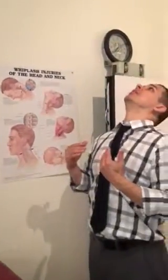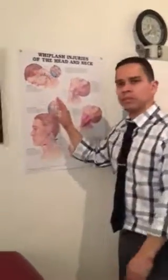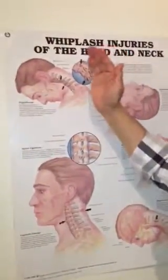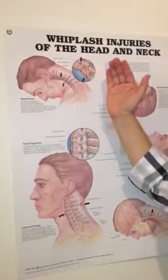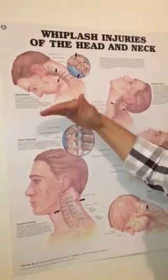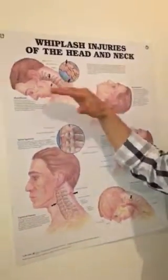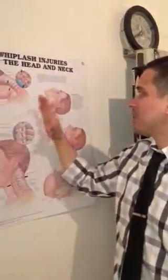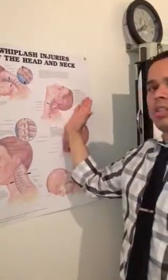Whiplash is an injury that occurs when the neck gets hyper-extended and hyper-flexed. We're going to take a look at the mechanism of this injury and why it creates pain. Looking at this gentleman here, you can see his neck hyper-flexing. This flexion motion is one of the parts that happens in a whiplash injury. The next motion is the hyper-extension injury.